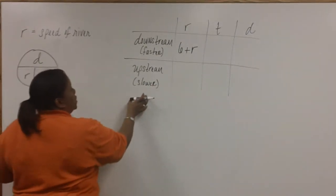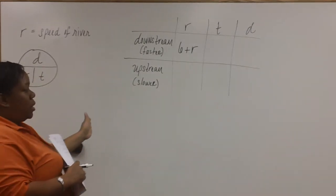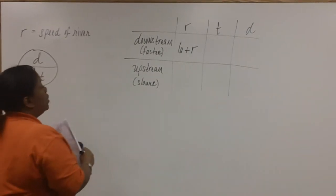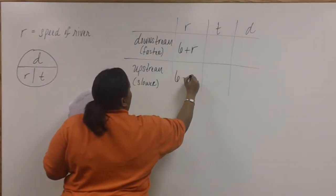But when it goes upstream, it's moving against the current, so it's being slowed down. So, for upstream, we're going to use minus.